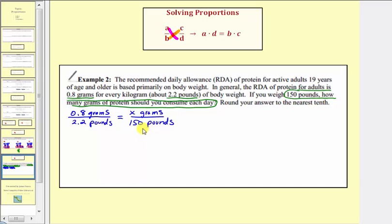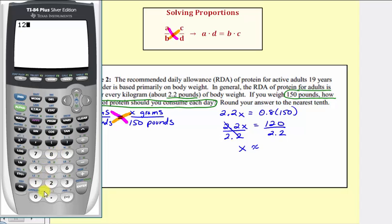Now that we have our proportion, we'll cross multiply and solve for x. So 2.2 times x must equal 0.8 times 150. We will leave the units off when we cross multiply. So again, 2.2 times x is 2.2x equals 0.8 times 150. Well 0.8 times 150 equals 120. So we have 2.2x equals 120. Now to solve for x, we divide both sides by 2.2. On the left, this simplifies to 1x or x. And now we'll find this quotient and round to the nearest tenth. So 120 divided by 2.2 to one decimal place would be approximately 54.5.